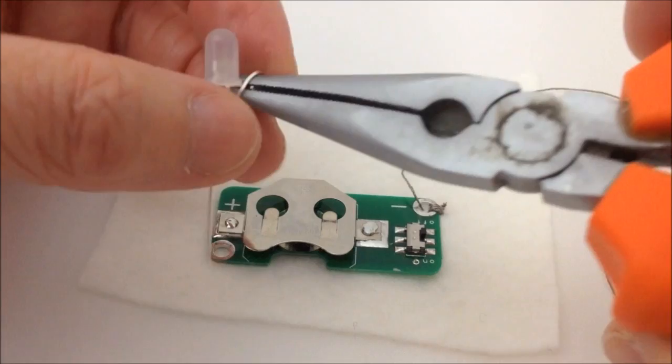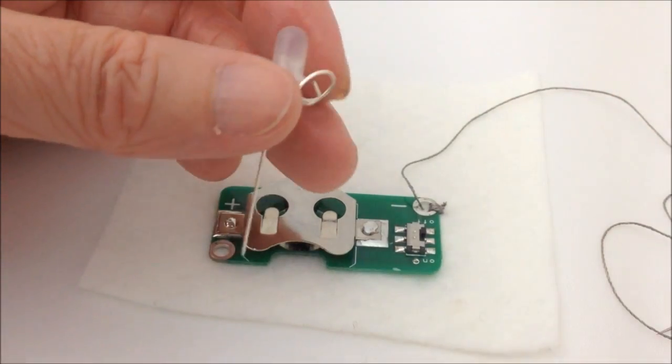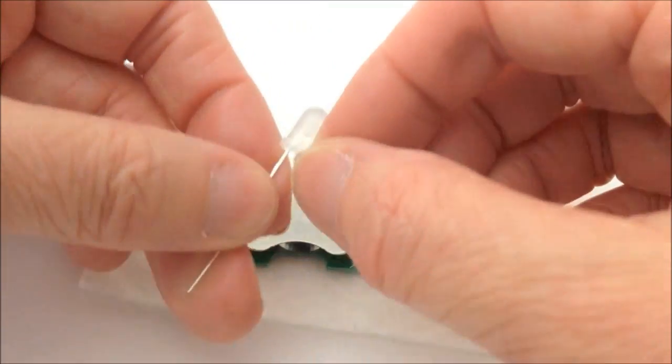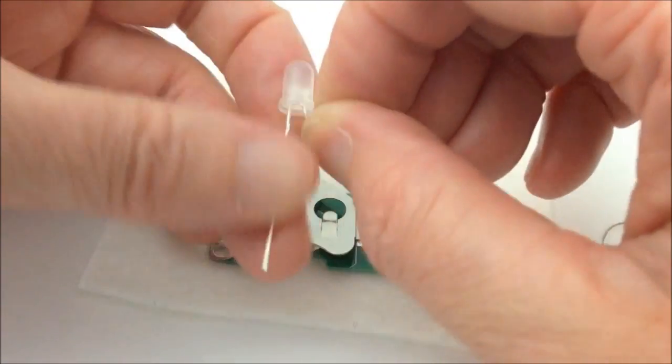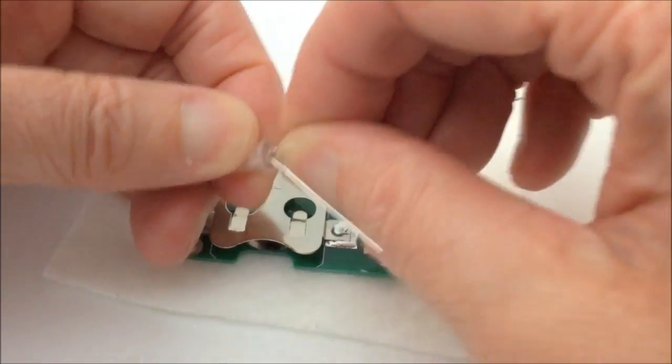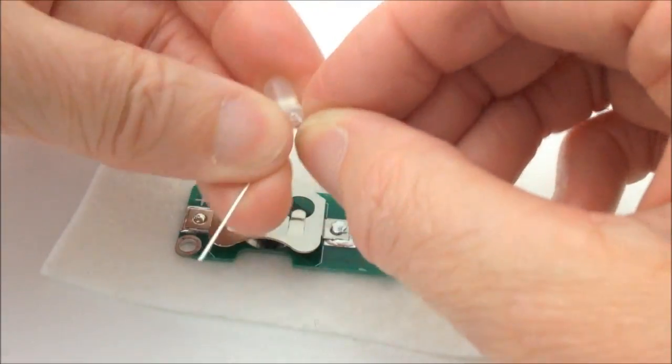Just twisting it to make a small loop and then just pulling the pliers off the leg of the LED and just flattening it out. I just want to make sure it's well away from the other leg on the LED.